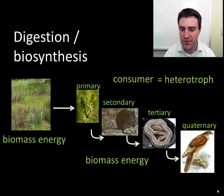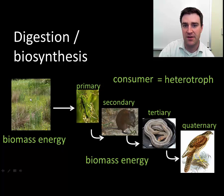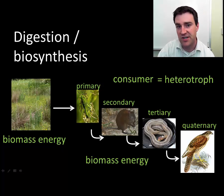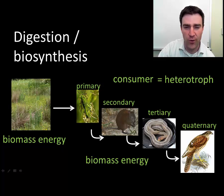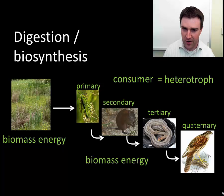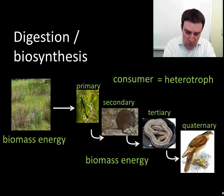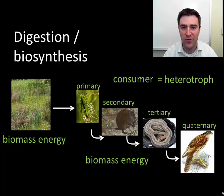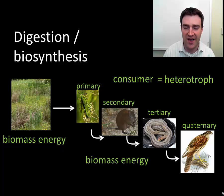Then there are heterotrophic consumers. Sometimes we organize them into different trophic levels: primary consumers who primarily eat the producers themselves — the herbivores — then secondary consumers who eat the primary consumers, tertiary consumers who eat the secondary consumers, and maybe even fourth-level consumers. We get our energy by digesting the biomass of other organisms, cutting their molecules up into monomers, and then reassembling them through biosynthetic pathways. For example, if I eat a cow, I cut those cow proteins up into amino acids and reassemble them into human proteins.